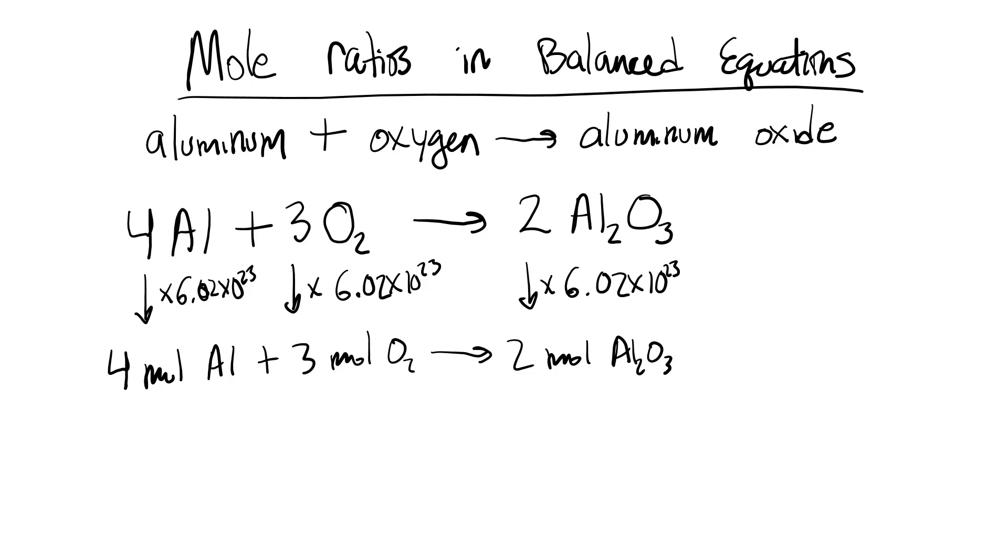So, the ratio between the coefficients is not only the ratio between the atoms and molecules but it's also the molar ratio or the mole ratio, the number of moles. So when you see those coefficients in front, that tells you if you had 4 moles of aluminum it would take 3 moles of oxygen molecules to react to make 2 moles of aluminum oxide.